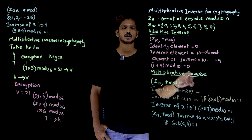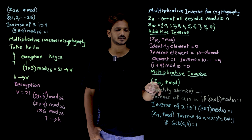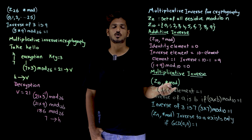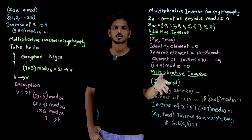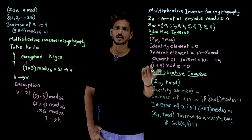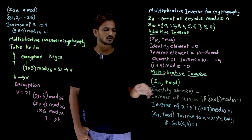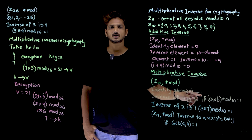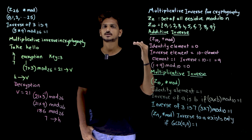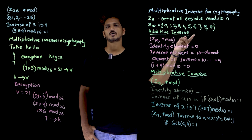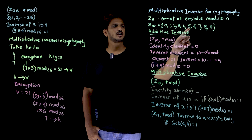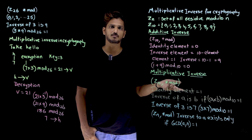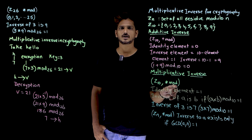Now we are going to look at multiplicative inverse. Take Z10 — the same elements — but now using multiplication modulo operation: multiply two numbers and take modulus 10. For multiplication modulo, the identity element is 1, because any number multiplied by 1 gives back the same number: 1×1 mod 10 = 1, 2×1 mod 10 = 2, 5×1 mod 10 = 5. That is why 1 is the identity element for multiplication modulo.